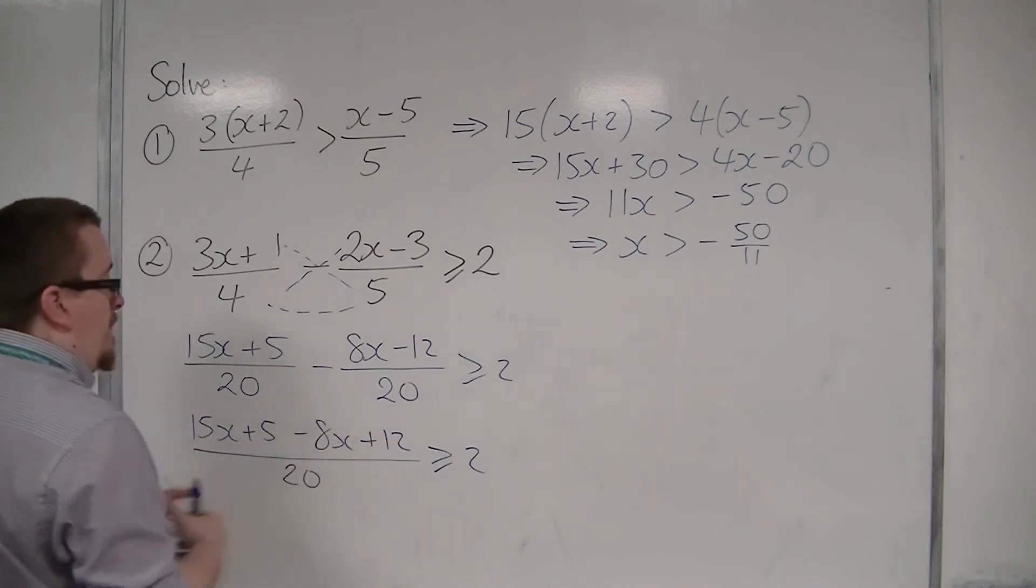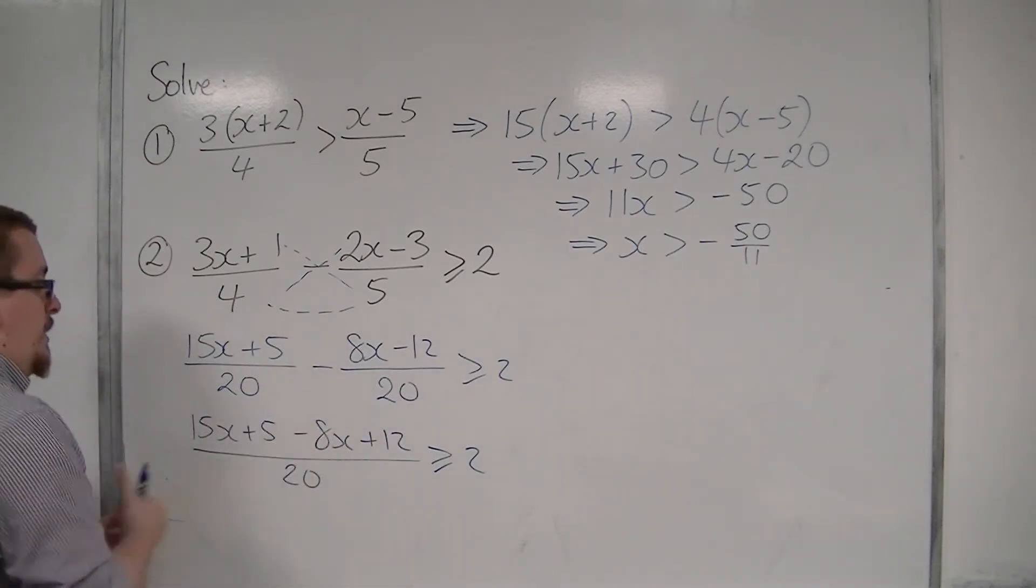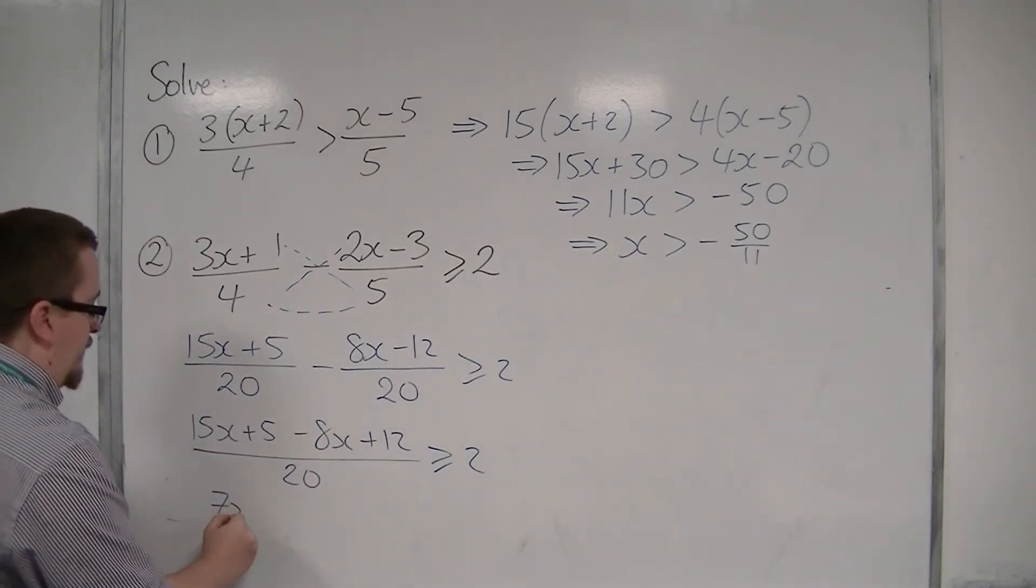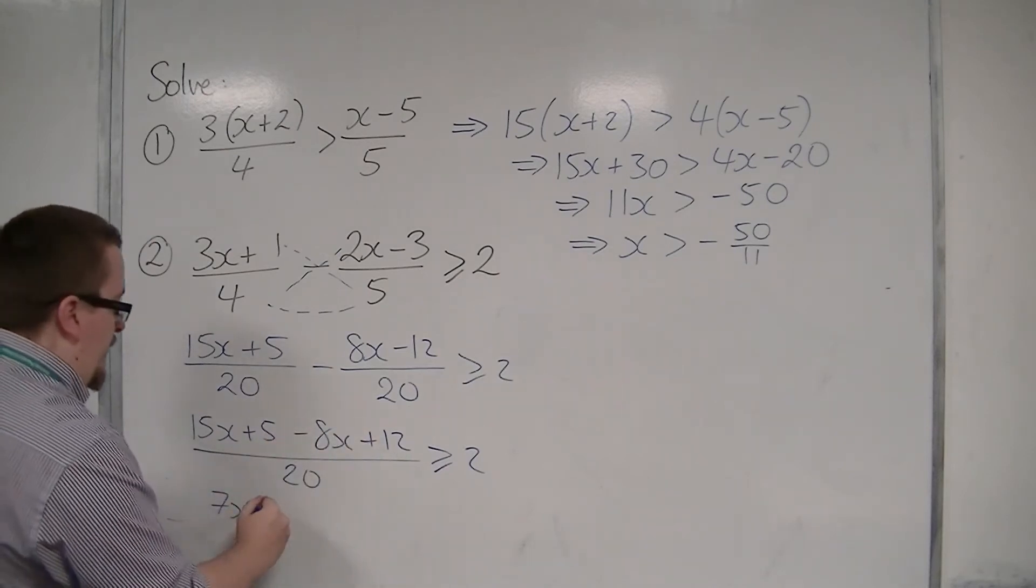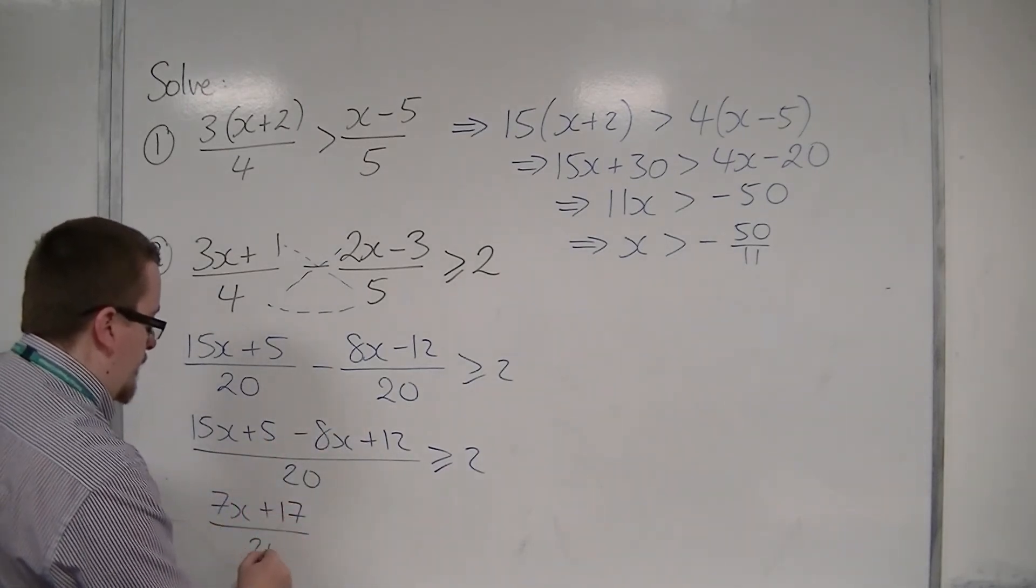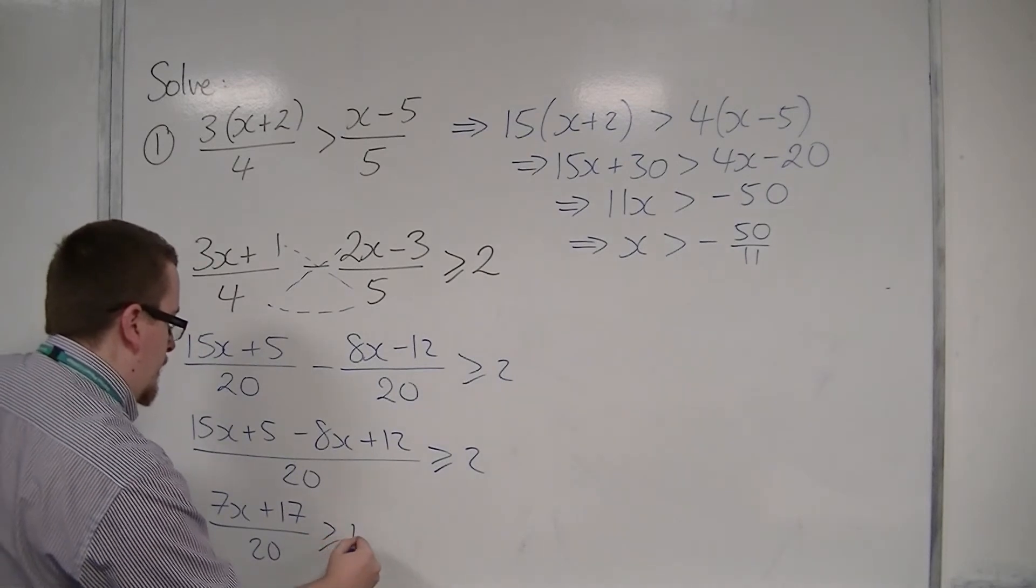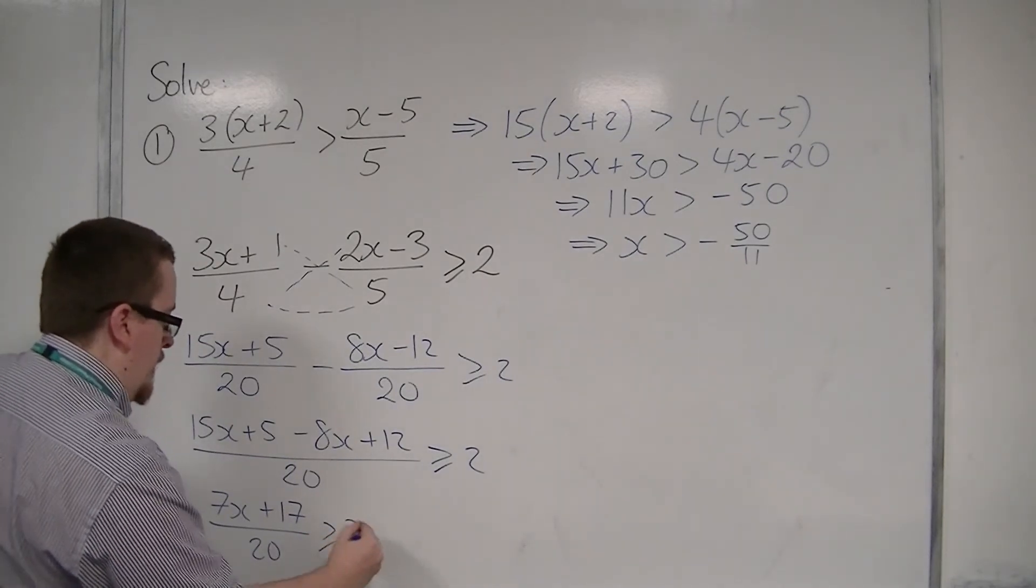So if I tidy up the numerator, 15x take away 8x is 7x, 5 plus 12 is 17. There we are.